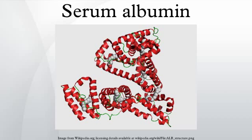Serum albumin, often referred to simply as blood albumin, is an albumin found in vertebrate blood. Human serum albumin is encoded by the ALB gene. Other mammalian forms, such as bovine serum albumin, are chemically similar.